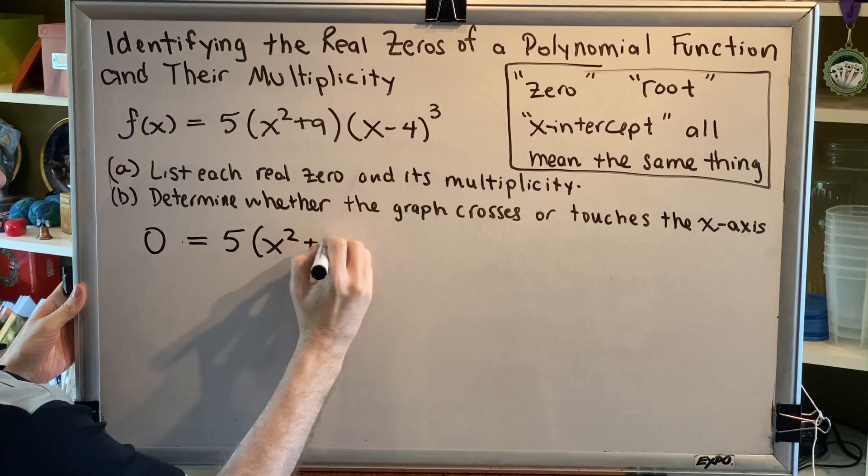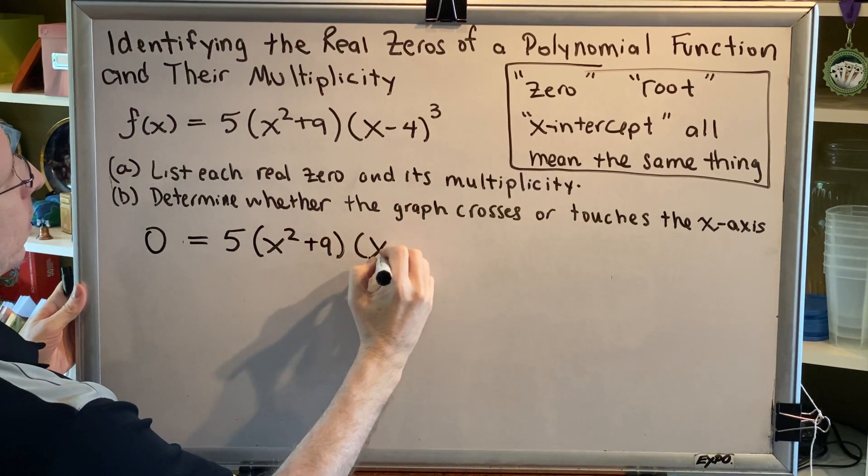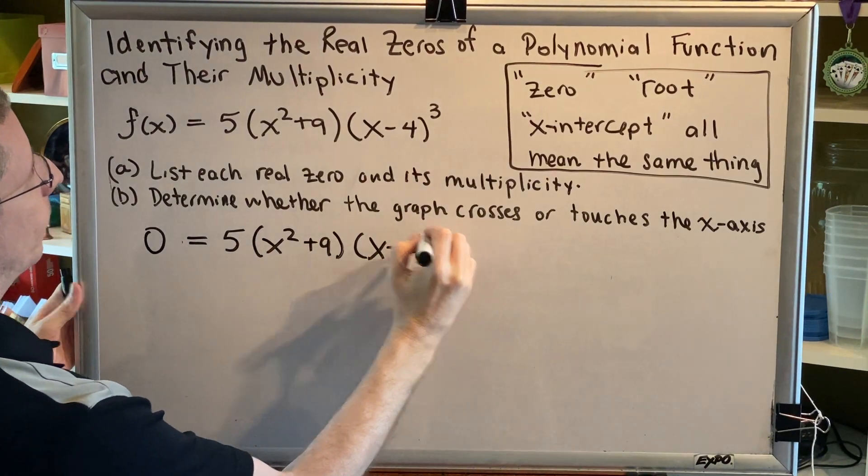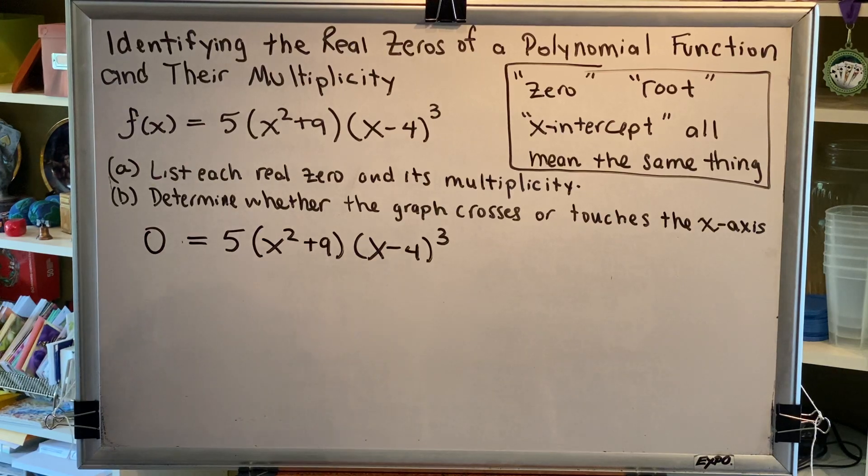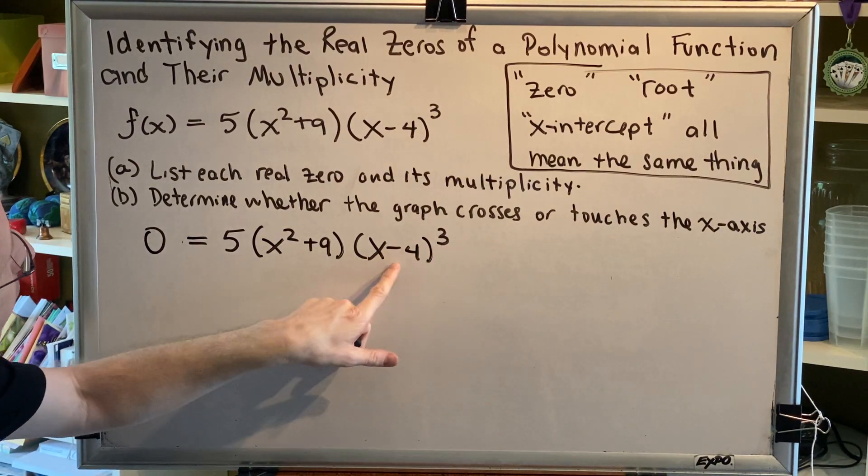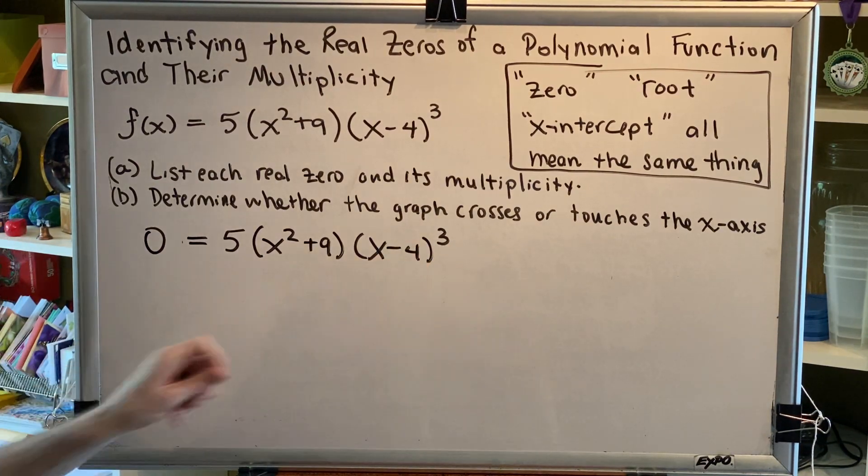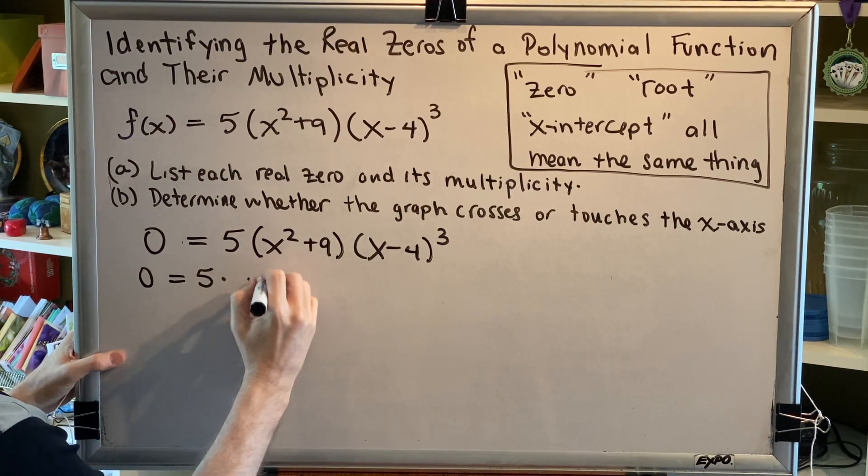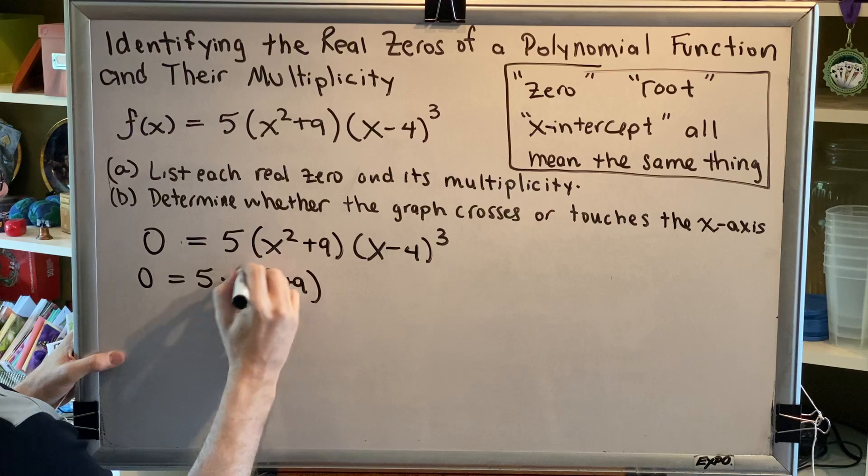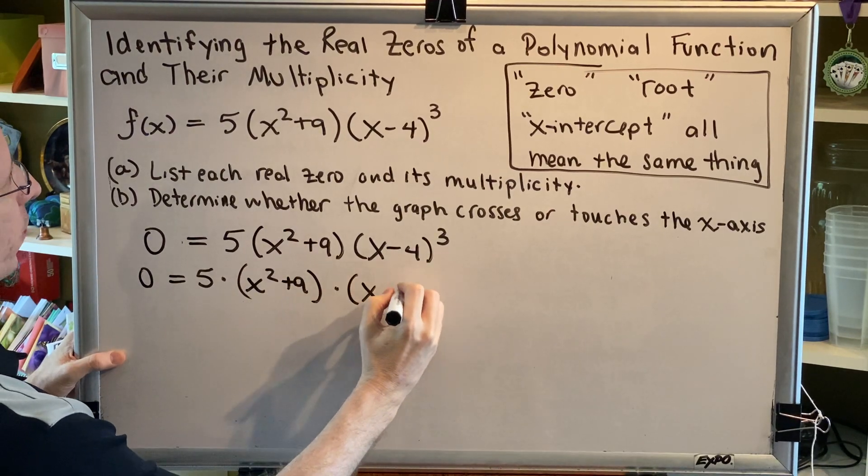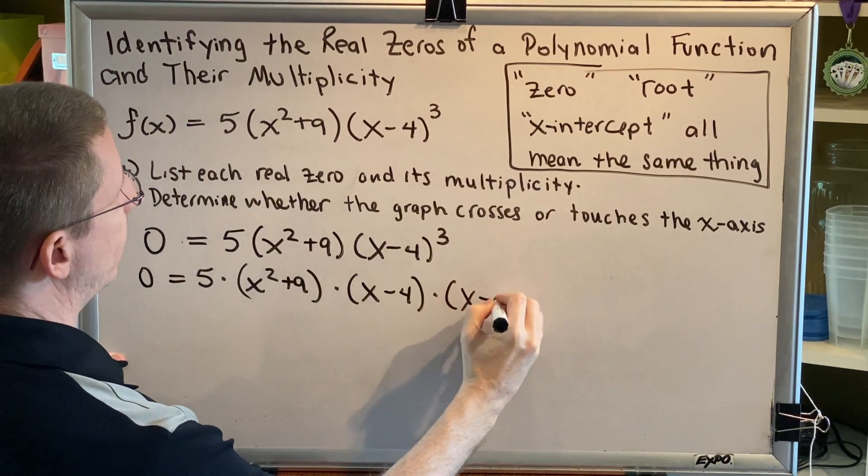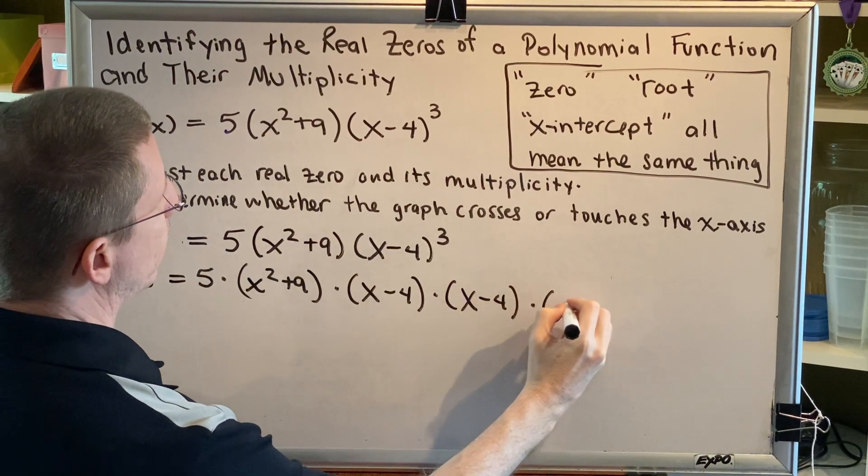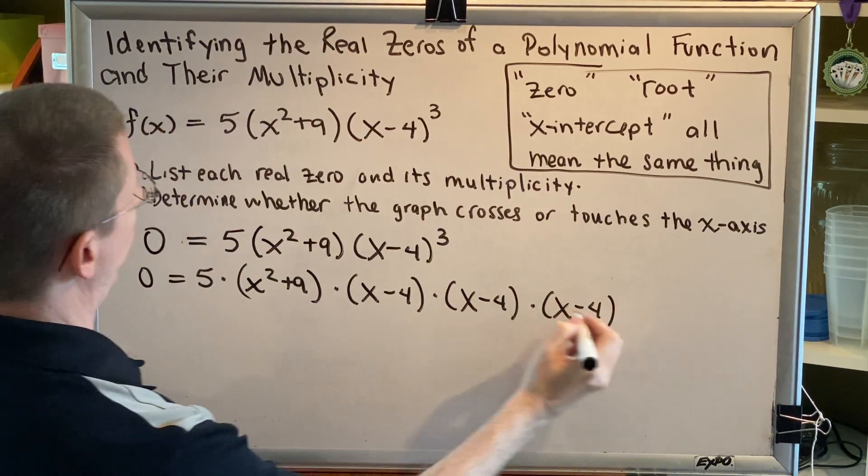To solve this, we are going to write each one of the factors represented by this exponent of 3. So we'll have 5 times x squared plus 9 times the first x minus 4 times the second x minus 4 times the third x minus 4.